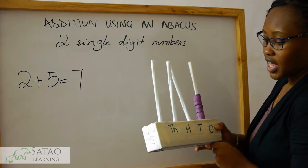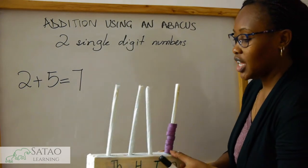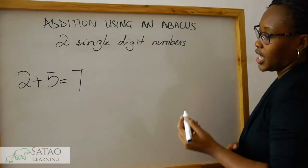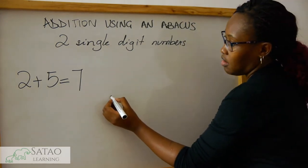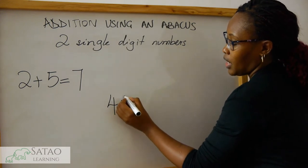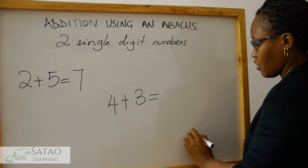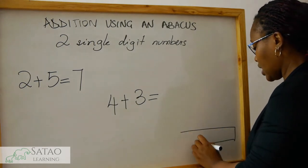So let's do another example. This time let's pretend we don't have an abacus. Let's say we are going to add four plus three equals. First thing we do, we draw an abacus.